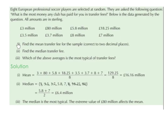Part one: find the mean transfer fee for the sample, correct to two decimal places. To get the mean of a set of data, we add the values together and divide by the amount. So it's going to be 3 plus 80 plus 5.8 plus 18.25 plus 3.5 plus 3.7 plus 8 plus 7, all divided by 8 because there were eight players surveyed.